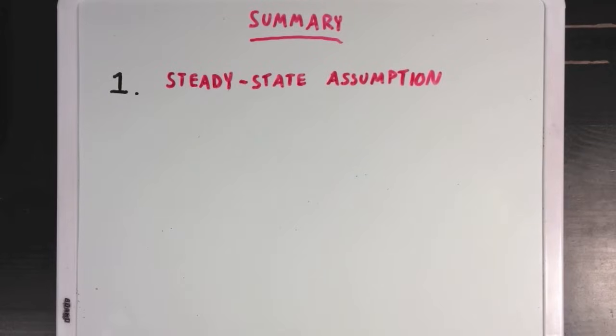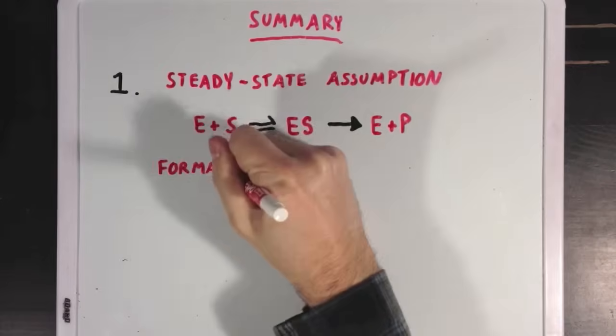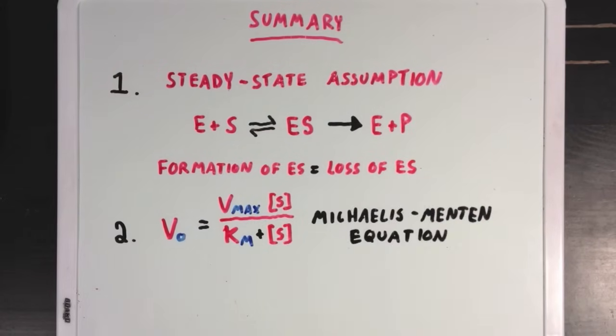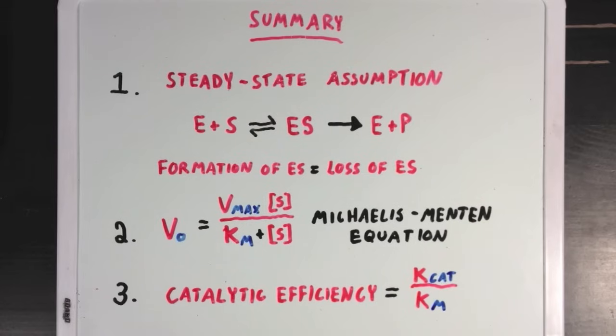So we covered a lot of content in this video. But the really crucial points to remember are, first, the idea of the steady state assumption that we make when looking at enzyme kinetics. And this is where we assume that the ES concentration is constant, meaning that the formation and loss of ES are equal. Second, we derived the critically important Michaelis-Menten equation, which you should consider committing to memory. And third, we talked about how you can score how good an enzyme is at speeding up reactions by looking at that enzyme's catalytic efficiency, which is a combination of two new terms we learned about, Kcat and KM.